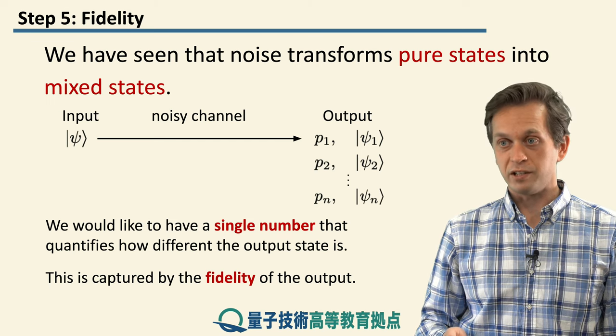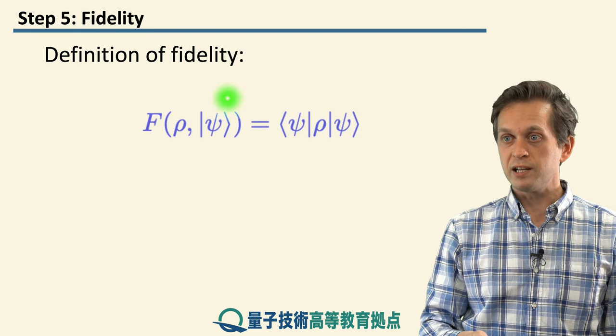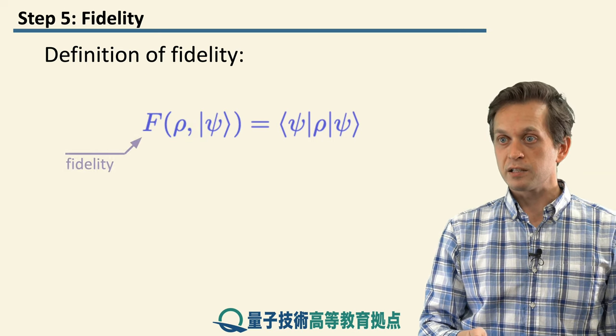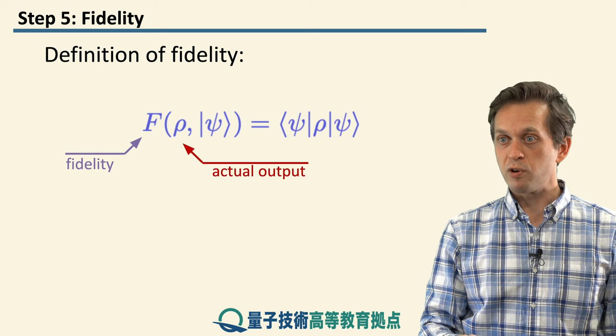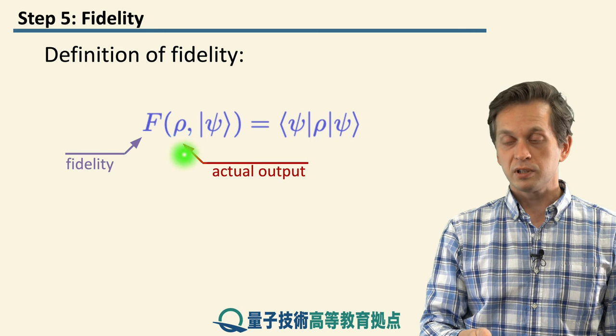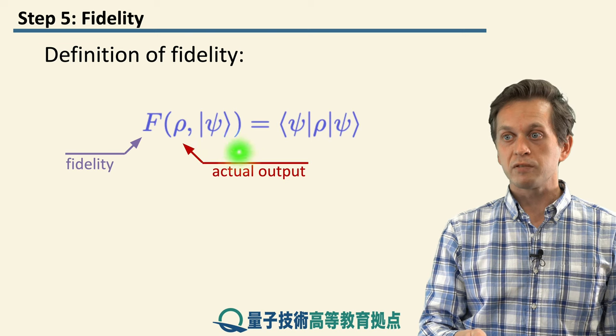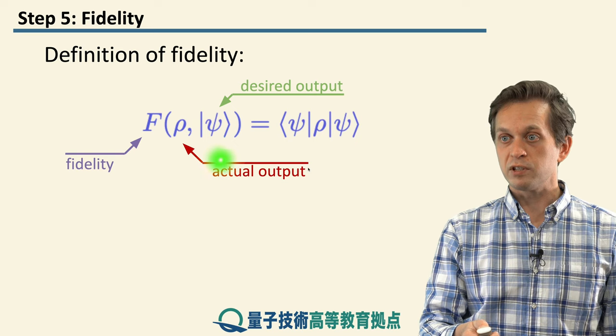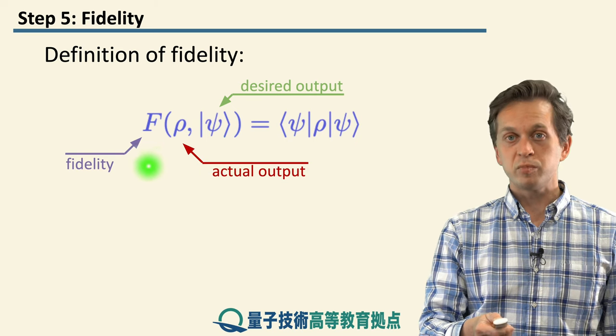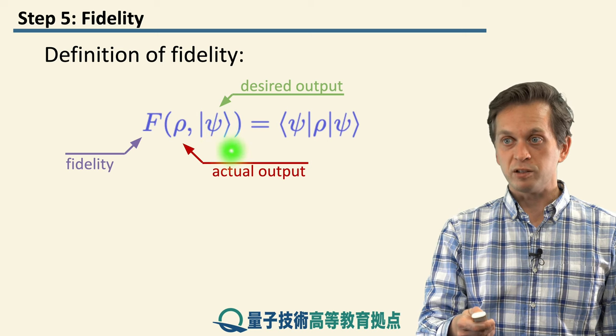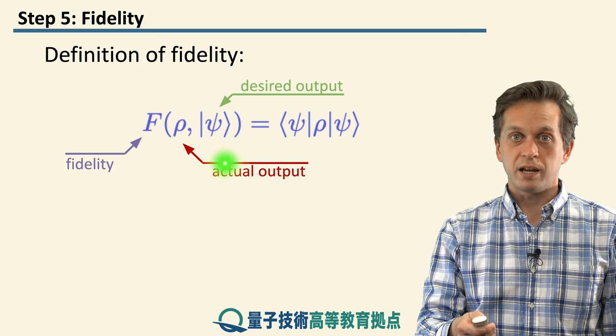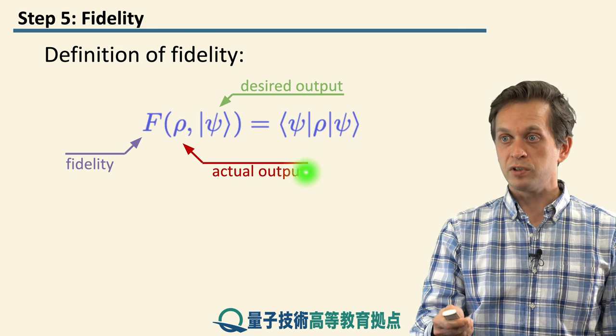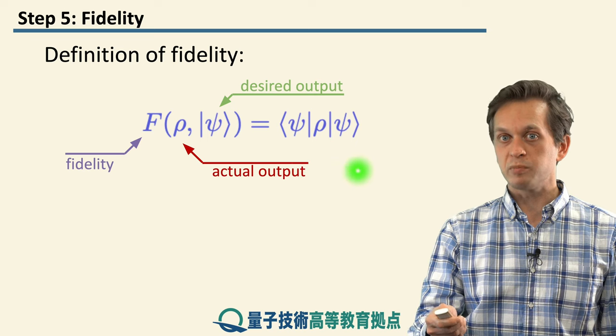And that's precisely what fidelity does. So let's have a look how it's defined. Normally we write fidelity between two states with capital letter F. This rho is the actual mixed state at the output. And just to remind ourselves what's the desired input, we also use that as the parameter in the definition of fidelity. So we have the fidelity between the output state with respect to the desired output state, or in many cases just the input state, is defined as this expectation value of the density matrix rho with respect to the pure state psi.